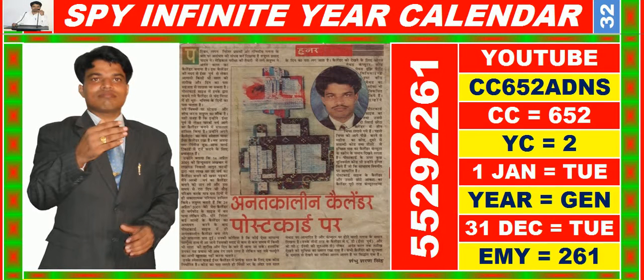Good morning, dear friends. You are heartily welcome in Master Key of Success. In this video you are watching SPY Infinite year calendar for the year having calendar code equal to 652, and you may also search it on YouTube by CC652ADS.